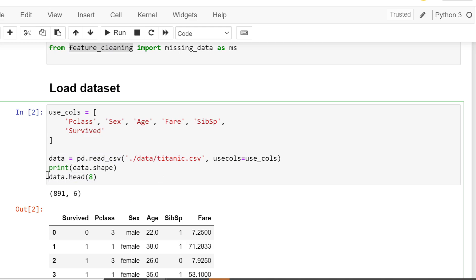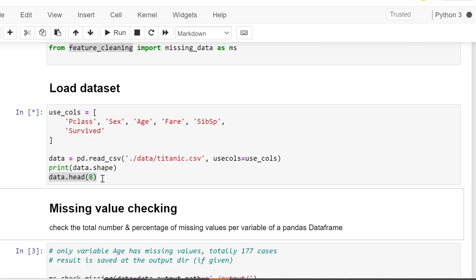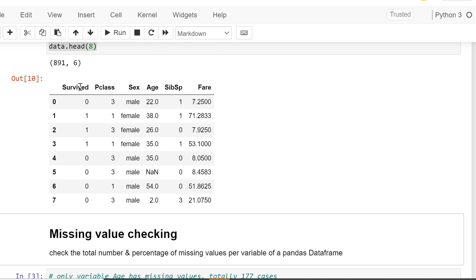Whether they survived or not survived—this is the Y column. Zero, one. Zero stands for not survived, one stands for survived. Passenger class, gender, age, siblings/spouse, fare. We don't really need to go into that detail. We just need to clean the data, right? From this I can see the fifth row is NaN.